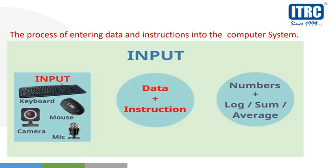Computer ko data dhena ya phir uske baad instructions dhena — ki in numbers ke saath kya karna hai. Suppose in numbers ko sum karna hai — that is instruction. Sum is instruction. Hum ne numbers diye data as input, and after giving this data we instruct the computer to make average, sum, or anything else — that is called instruction. Yehi computer ko data aur instruction dhena, hum isko input kehte hai.